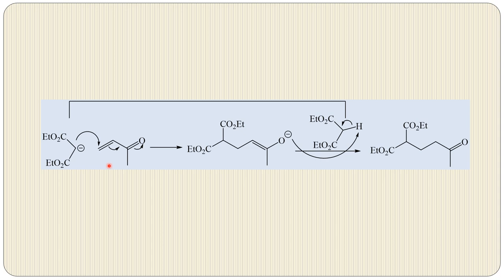Here is the mechanism showing an advantage: when diethyl malonate reacts with the enone, protonation of the intermediate involves abstraction of a proton from another molecule of diethyl malonate. This anion then reacts again in the first step. So once the reaction is started, we do not need additional base to abstract the proton — the anion is produced during the protonation step and recycles.